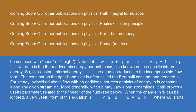For constant internal energy e, the equation reduces to the incompressible flow form. The constant on the right-hand side is often called the Bernoulli constant and denoted B. For steady inviscid adiabatic flow with no additional sources or sinks of energy, B is constant along any given streamline. More generally, when B may vary along streamlines, it still proves a useful parameter related to the head of the fluid. When the change in ψ can be ignored, a very useful form of this equation is: v²/2 + w = w₀, where w₀ is the total enthalpy.